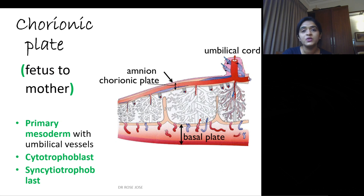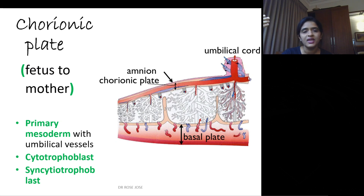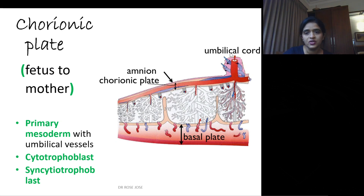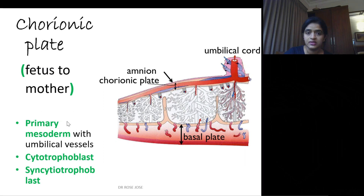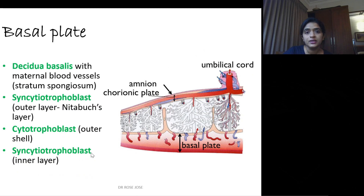Placenta has got a chorionic plate and a basal plate. The chorionic plate we discuss from the fetal side, whereas the basal plate we talk about from the maternal side. From fetus to mother, the layers you encounter are: first, the primary mesoderm with umbilical blood vessels — primary mesoderm is the first formed mesoderm, that is the extra-embryonic mesoderm — then the cytotrophoblast, followed by the syncytiotrophoblast.